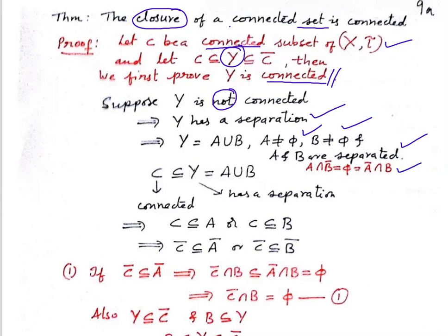A and B being separated means: A-bar ∩ B = ∅ and A ∩ B-bar = ∅. Now, C is a connected subset of Y and Y has a separation. By our theorem, C must be completely contained in A or completely contained in B. Whenever C is contained in A, we have C-bar ⊆ A-bar, and whenever C is contained in B, we have C-bar ⊆ B-bar.